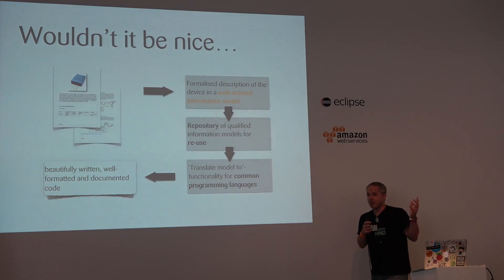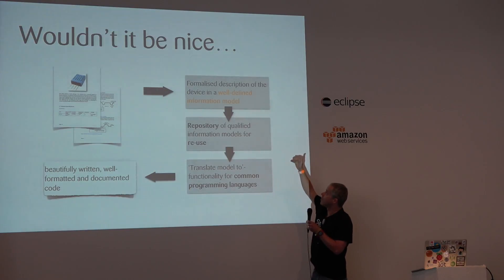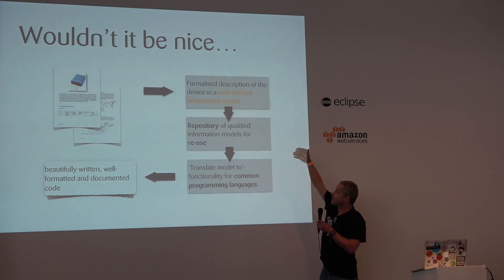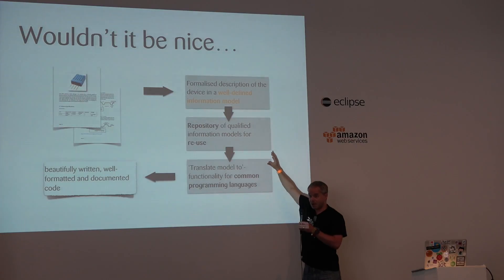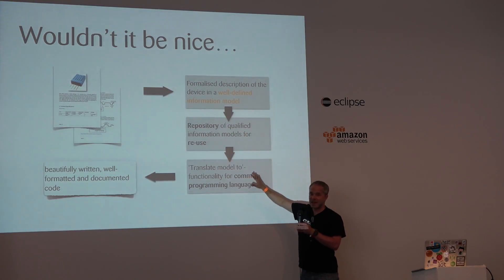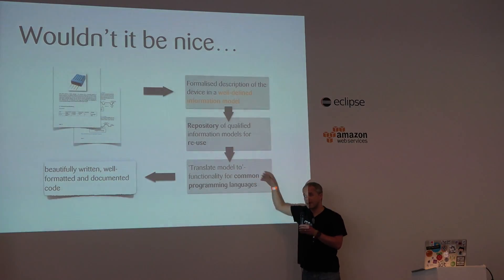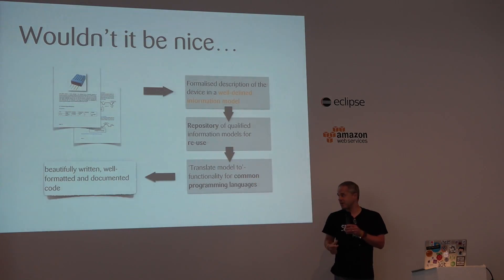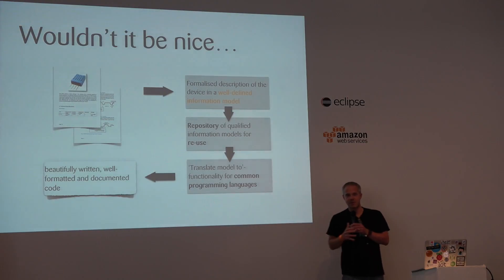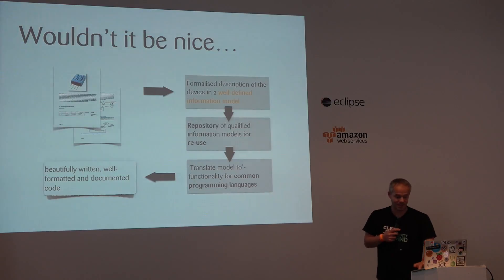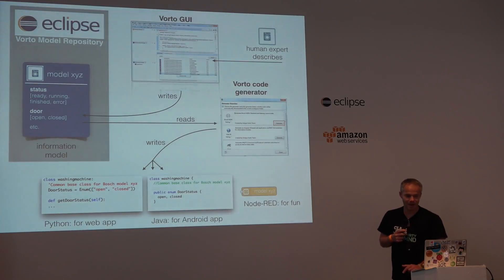So wouldn't it be nice if you could formalize all this? Some well-defined information model, a repository of models that you can reuse, some translate-to-functionality that takes the information model and creates, for example, a Java object out of it, and then beautifully well-formatted and documented code. And there's one thing that does it all — that's Eclipse Vorto.